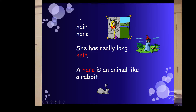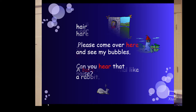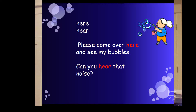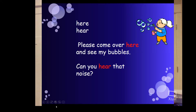Now we have hair versus hare. 'She has really long hair' — think of the I that has to do with me or I, I have long hair. A hare is an animal, like a rabbit. Next, here versus hear. 'Please come over here and see my bubbles' — here indicates distance, like over here. 'Can you hear that noise?' Hear rhymes with ear and even has ear in it — that has to do with your senses, you're hearing something.